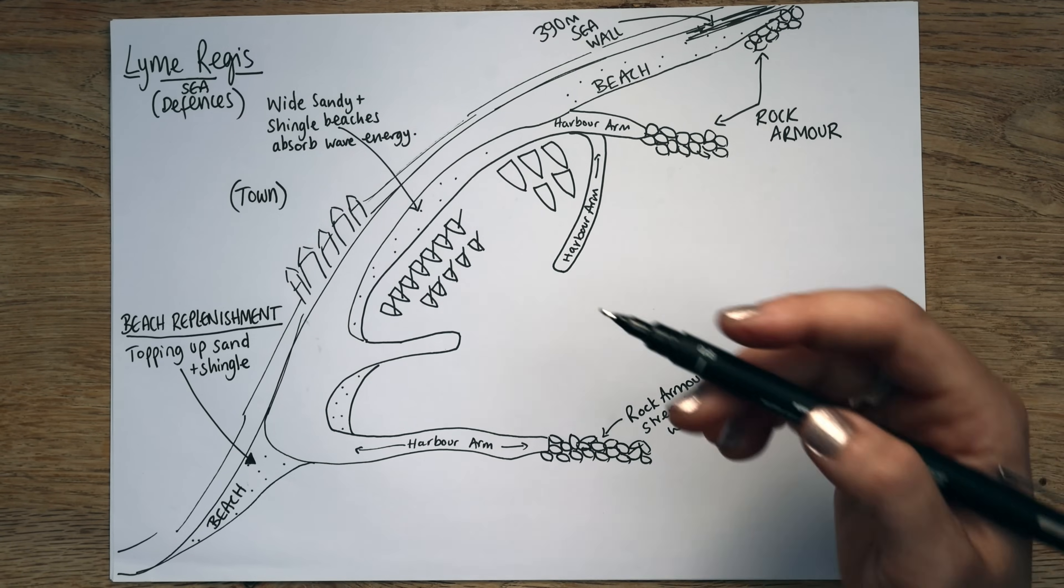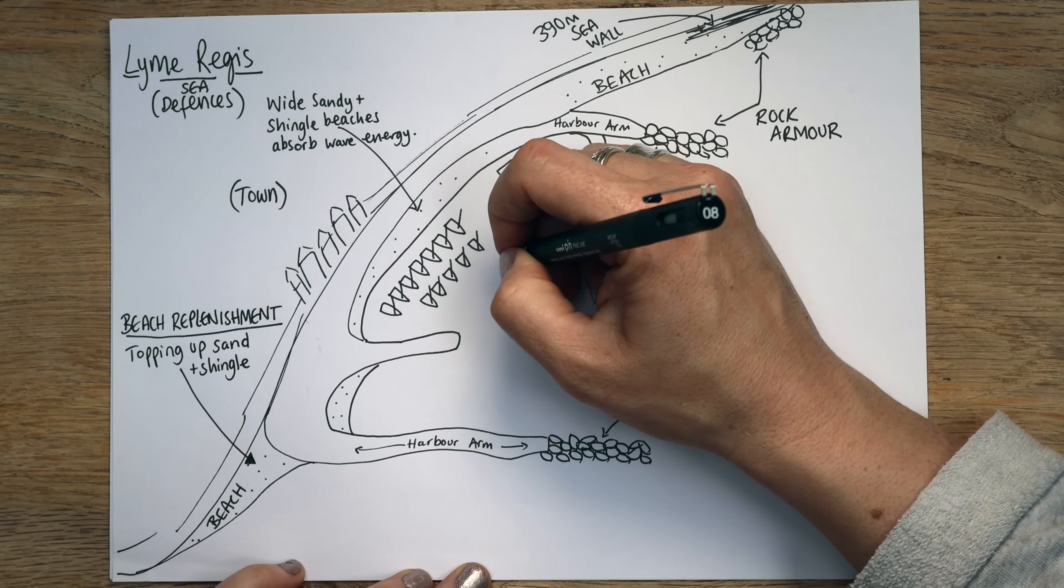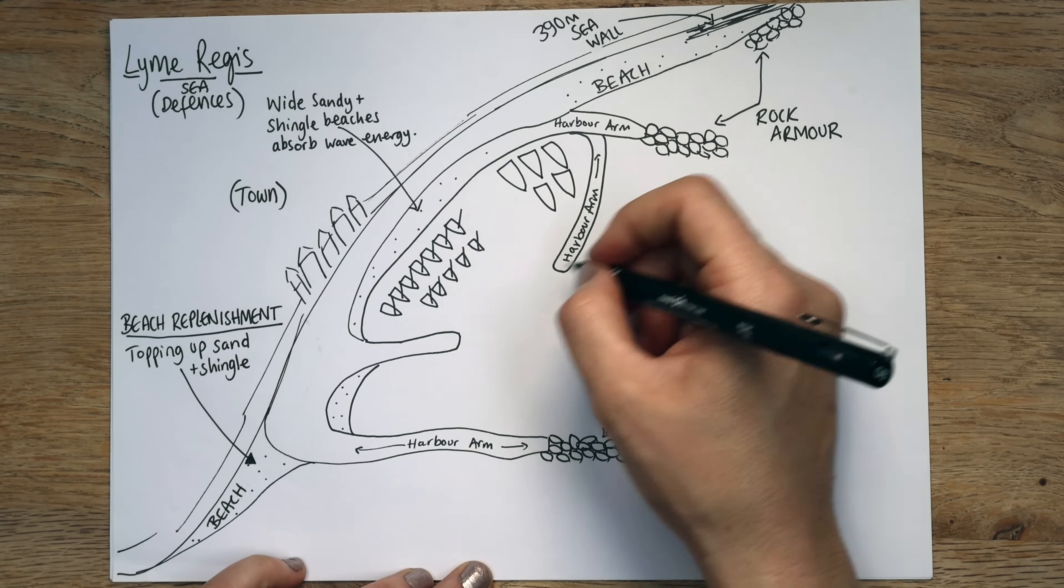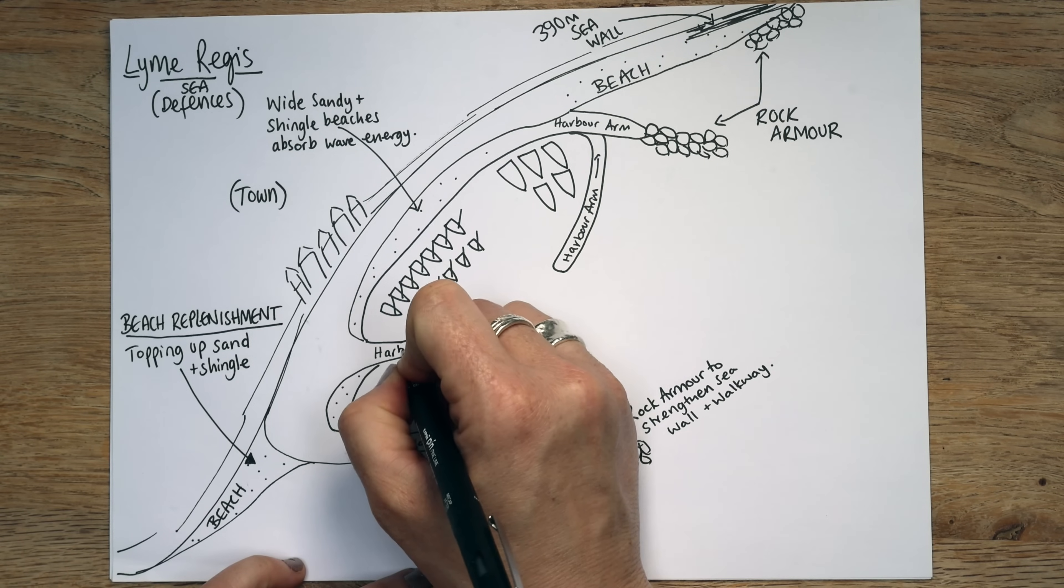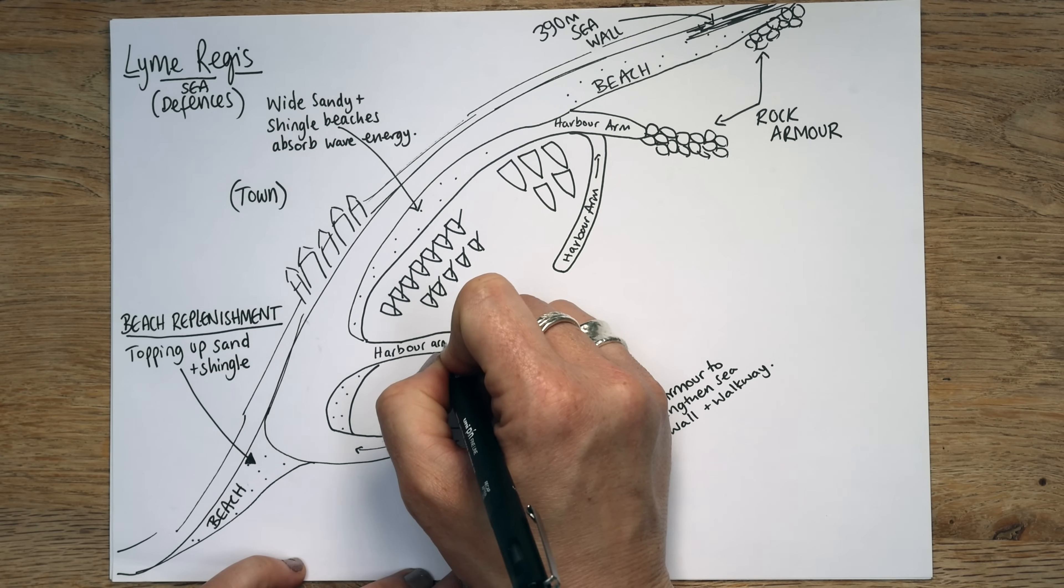So essentially the beach is the first line of defence. It's not in this case because you've got the harbour arms, but a beach is a big line of defence before you actually get to those beach huts, the houses, the restaurants, the cafes and so on. Now where are they getting the sand from? I'll tell you where they're getting it from. They're dredging the harbour. So this is our harbour. Got our harbour arms either side of it.